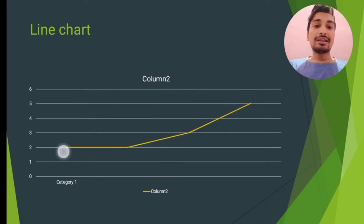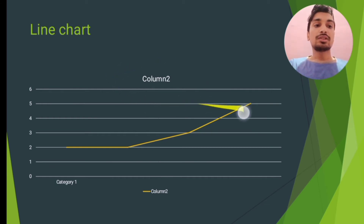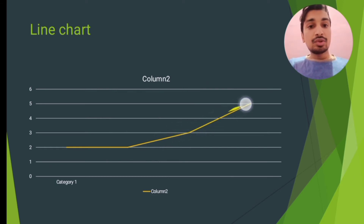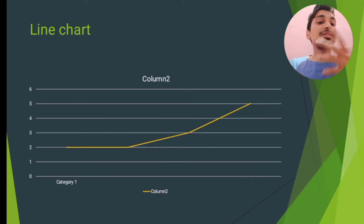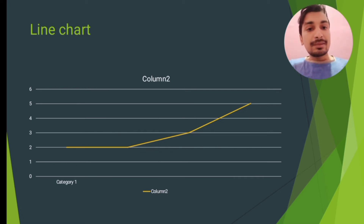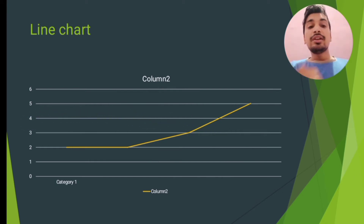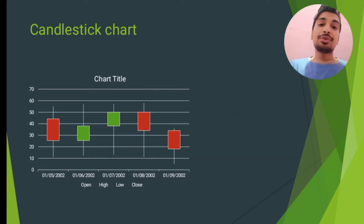In this line chart, just imagine a hypothetical share. The price of the share is 2 rupees, then the price goes up to 3 rupees, then to 4 rupees. So the price of the share is moving, and at a certain time period it is 2 rupees, then 3 rupees, then 4 rupees. The price of the share is represented in the form of a line chart. This is called a line chart.